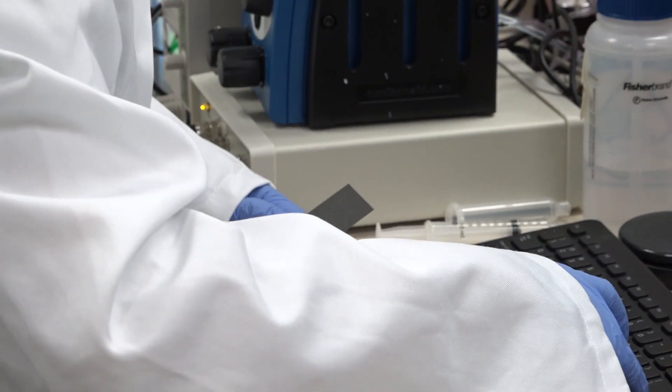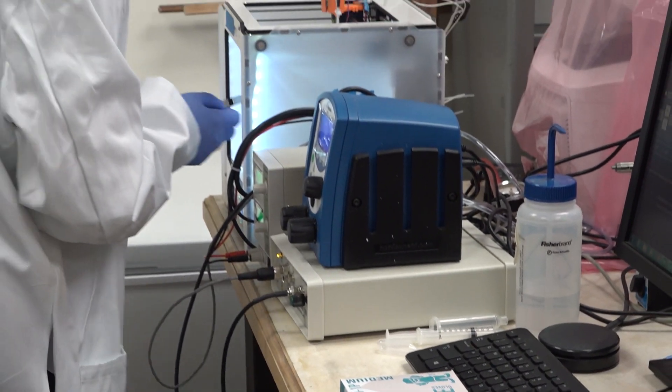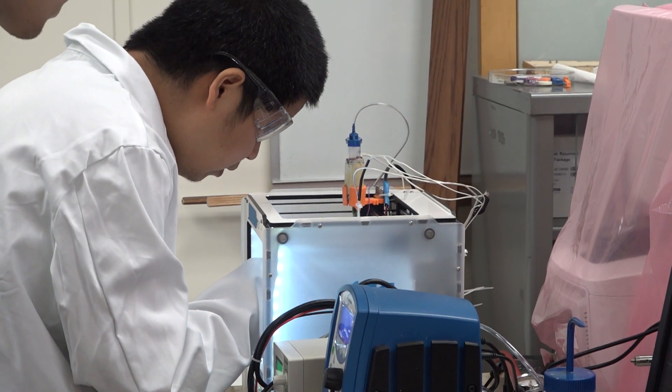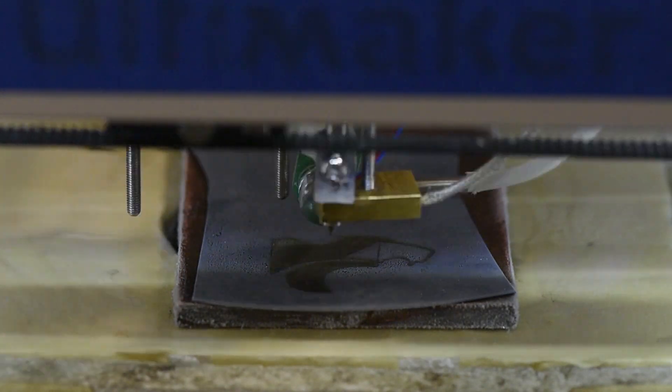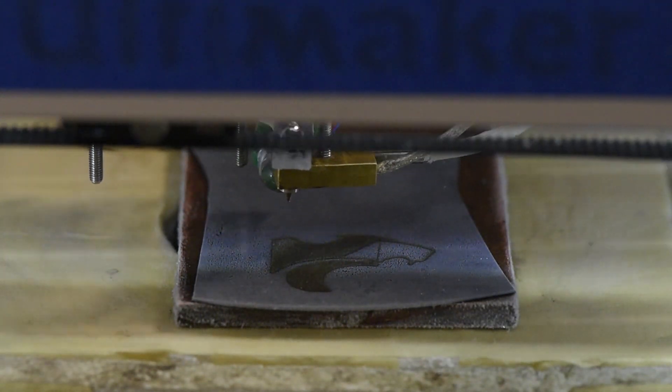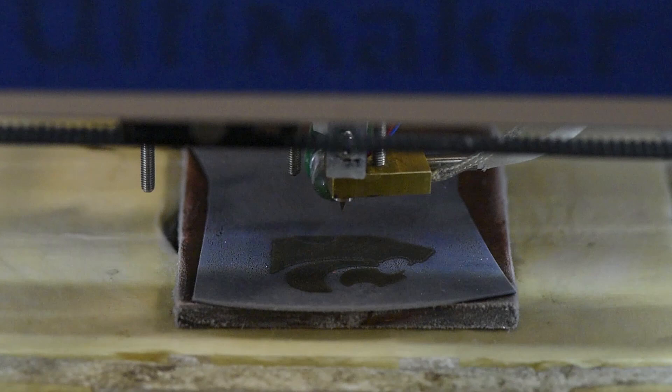And then we load onto the 3D printer. We use inkjet printing method to inject droplets one by one. It's frozen into ice. And then we finally achieve the 3D printed ice structure.